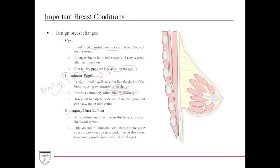Mammary ductectasia involves over-dilation of the normal ducts, where substances like milk, colostrum, or other lactiferous discharge can clog the ducts and cause dilation of the ductal system. It can present with skin changes, tenderness, or discharge — most notably a greenish discharge. So if you see a green discharge, think mammary ductectasia. If it's bloody and not malignant, think intraductal papilloma. If ultrasound shows a fluid-filled cyst with no malignancy, it can simply be aspirated.